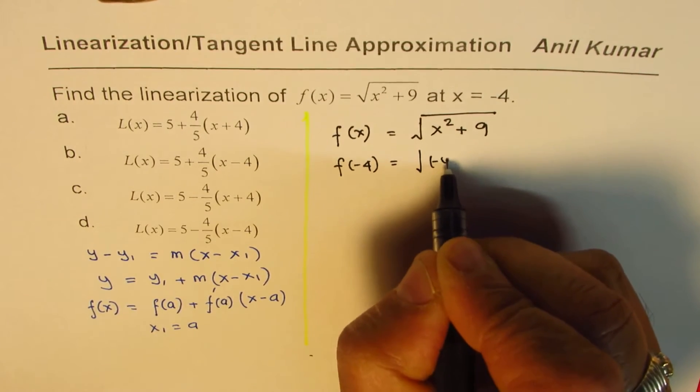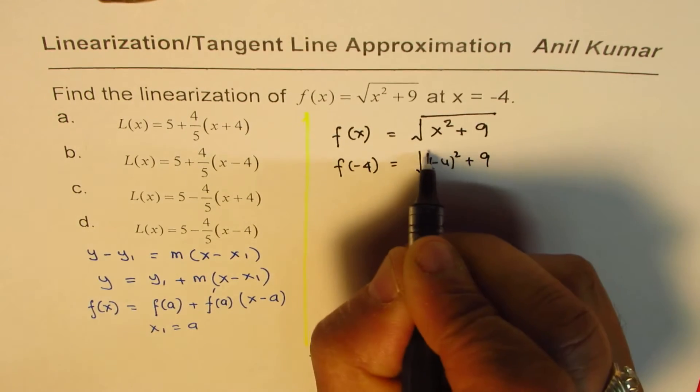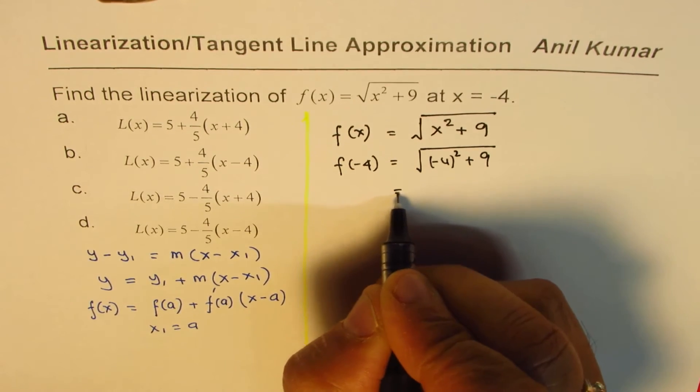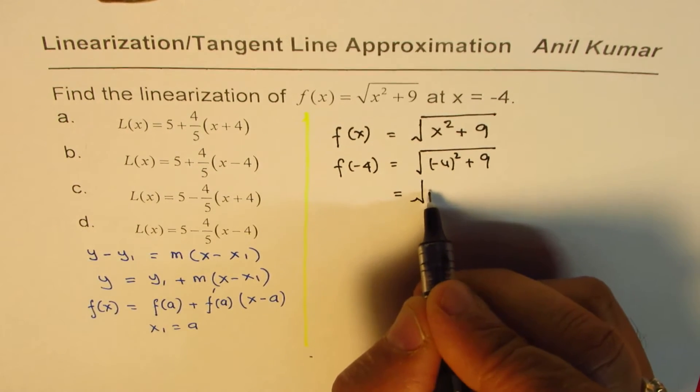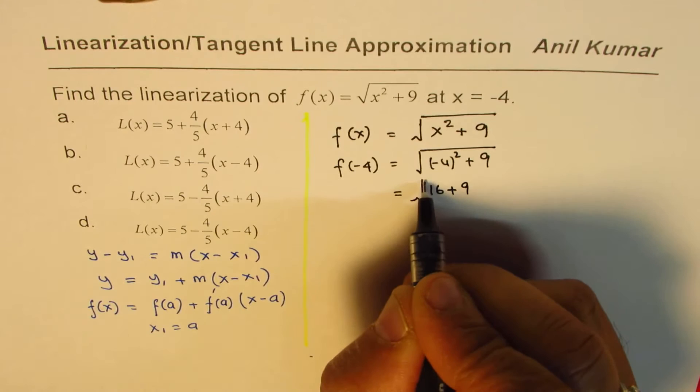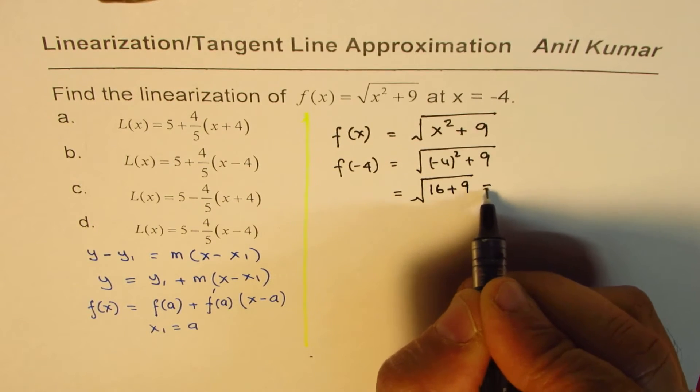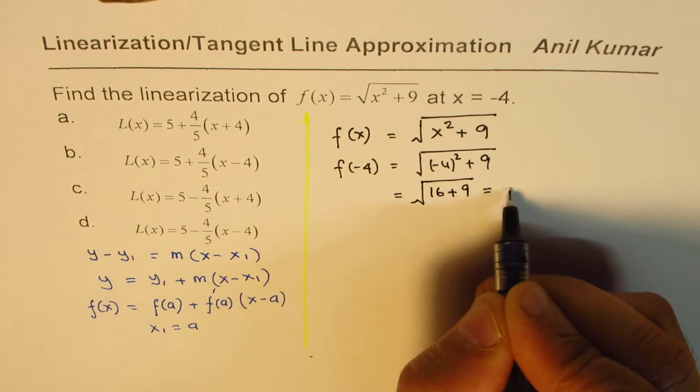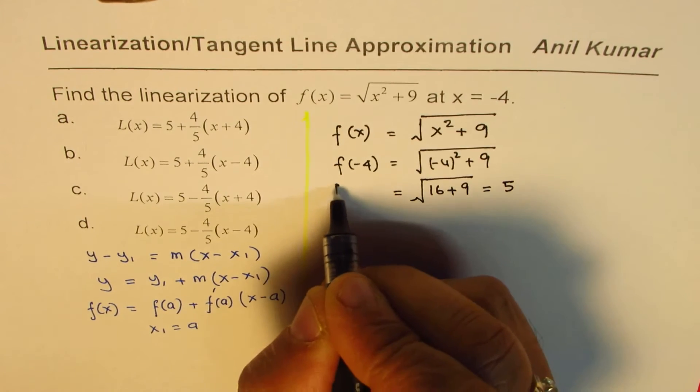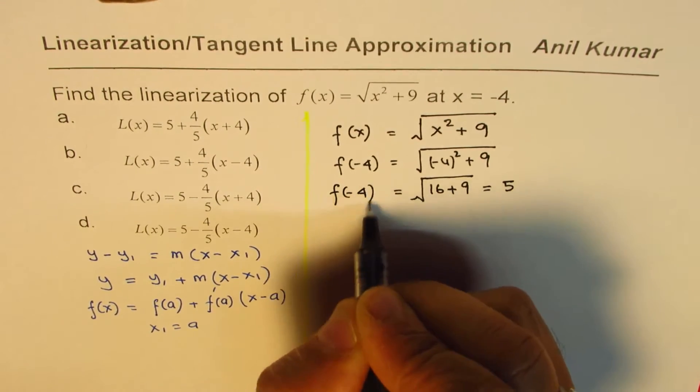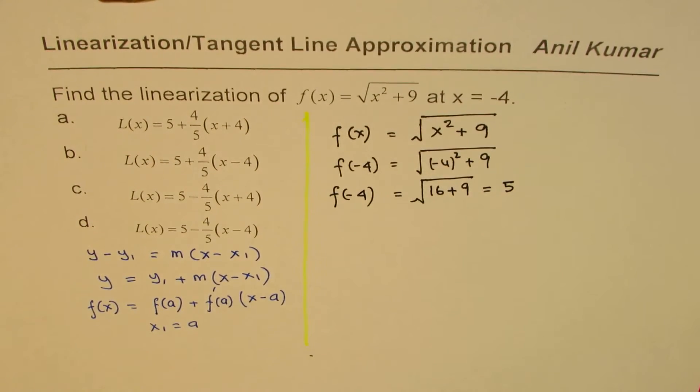So let's find what is the value of this function at minus 4. So that gives us minus 4 squared plus 9, and that is equal to square root of 16 plus 9, which is equal to square root of 25, which is 5.